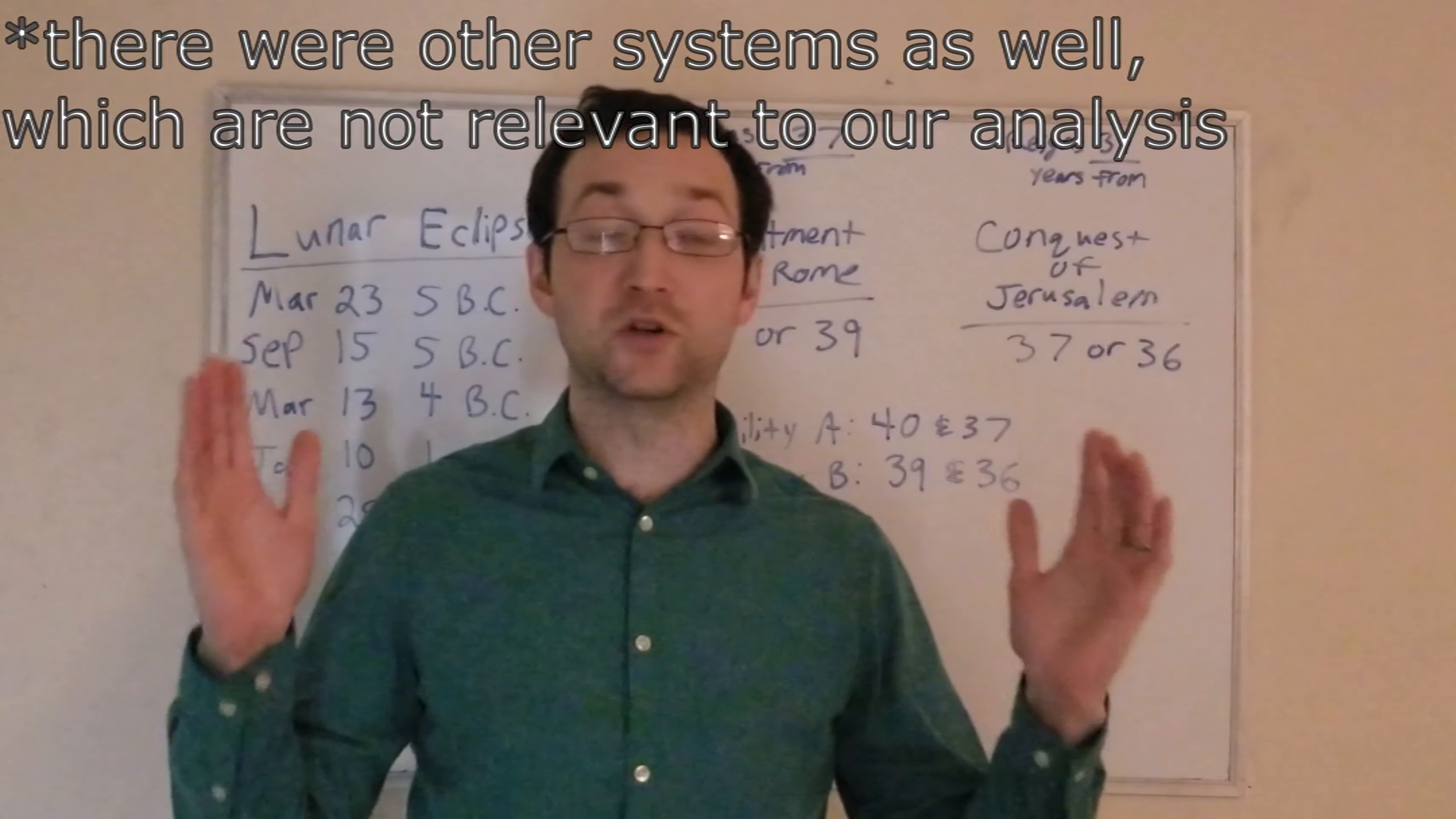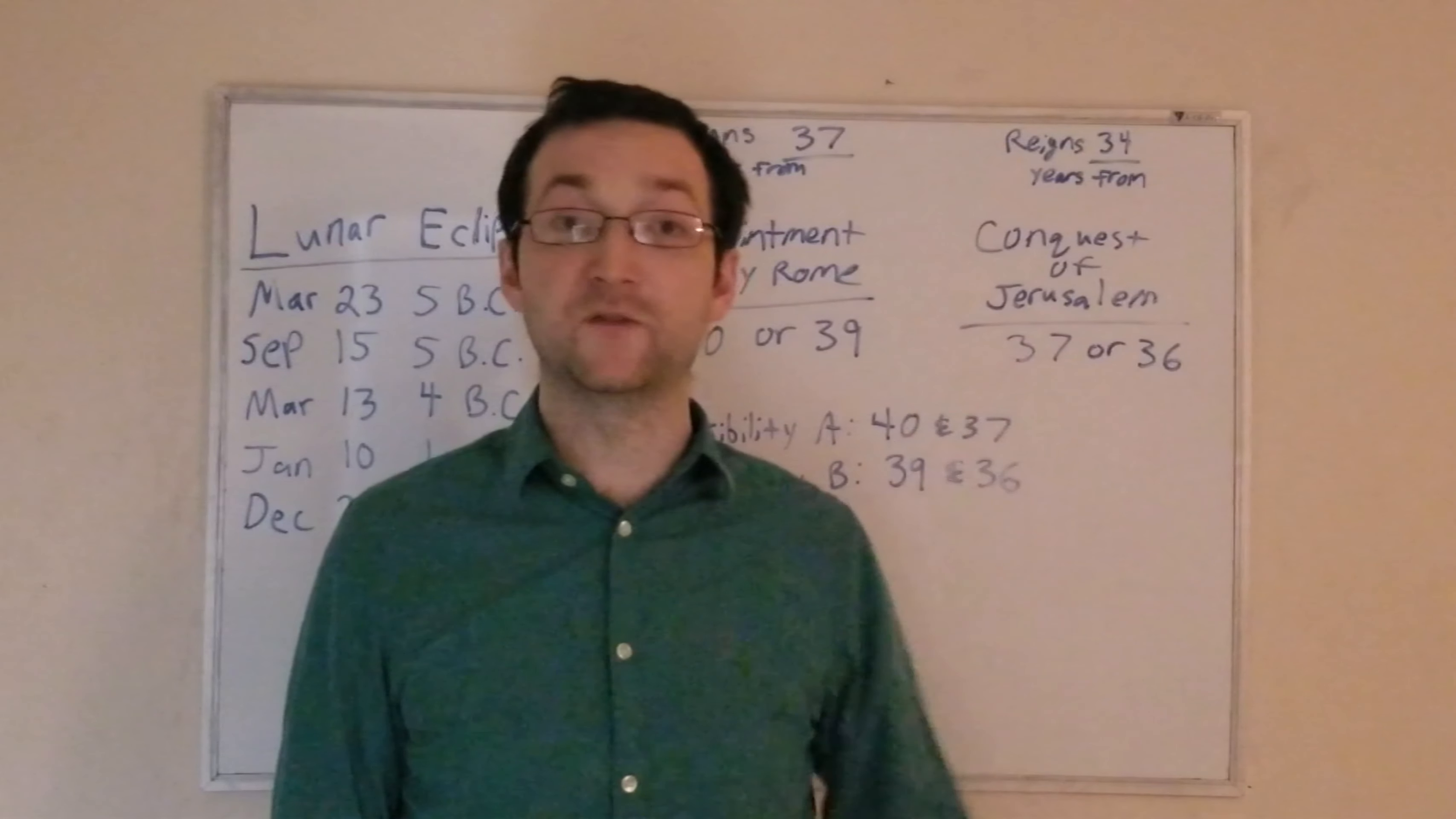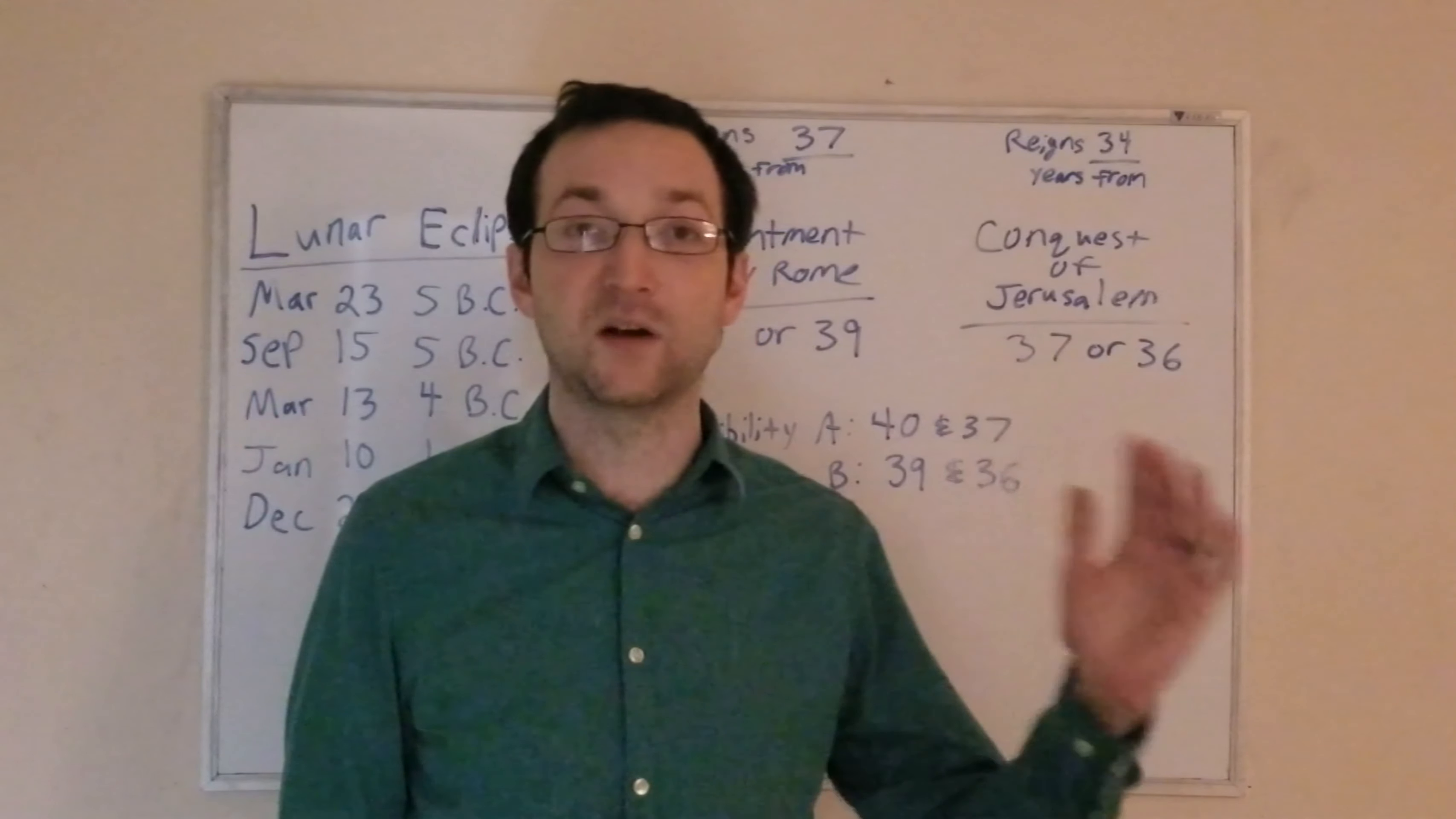Both of these methods were used historically. Both of these methods were used by rulers over the Jews. And both of them are plausible interpretations of Josephus. Sometimes Josephus counts inclusively, and sometimes he does not. This is one of the great difficulties in interpreting Josephus as, he gave us the numbers, but how is he counting?